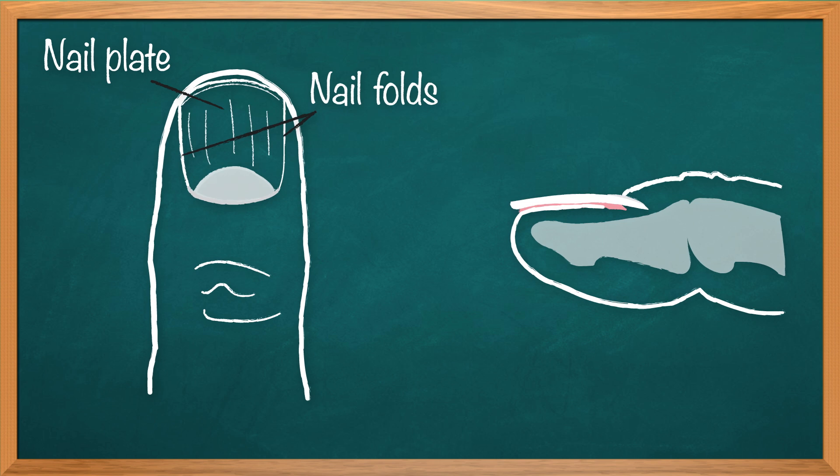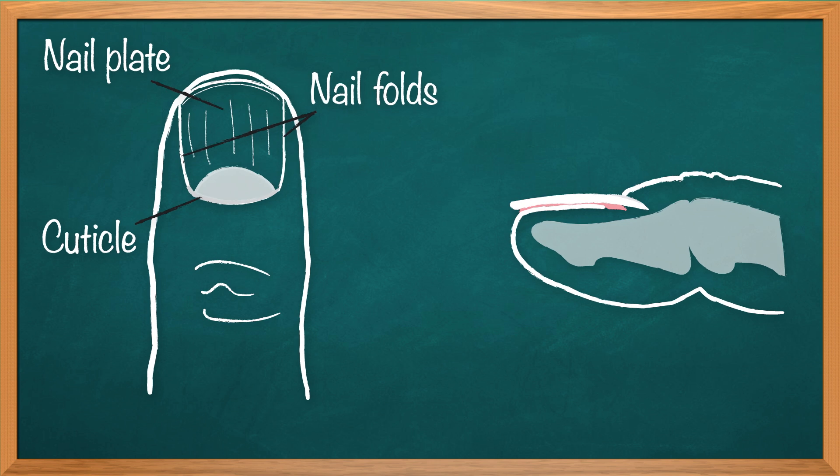There's the nail folds, the skin on the sides of that nail plate. There's the cuticle, which is a protective layer of tissue that covers new cells as they grow.